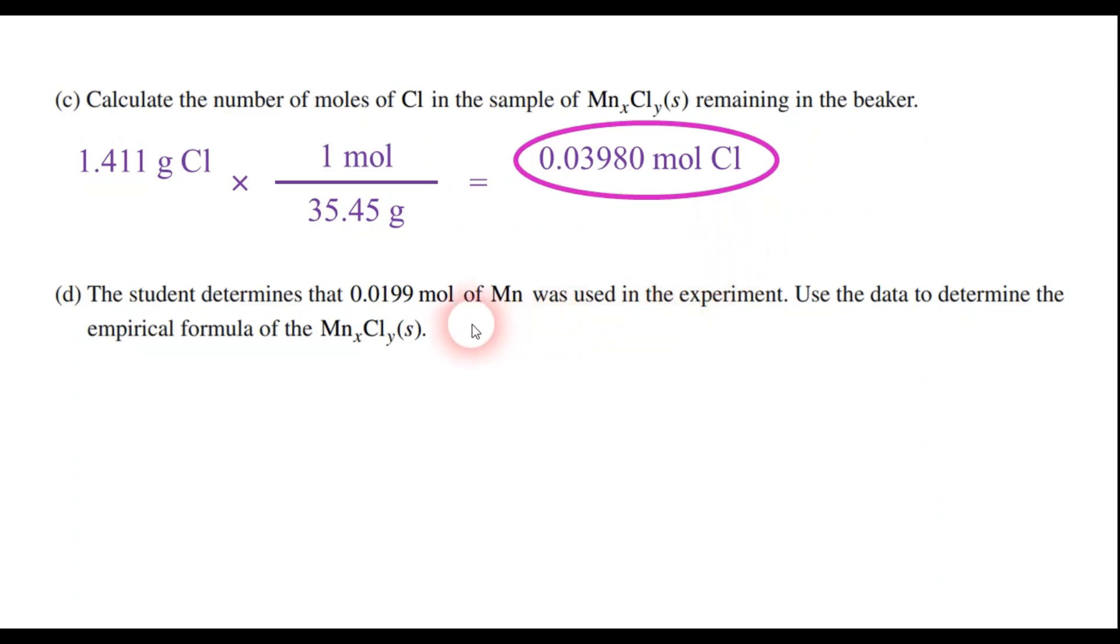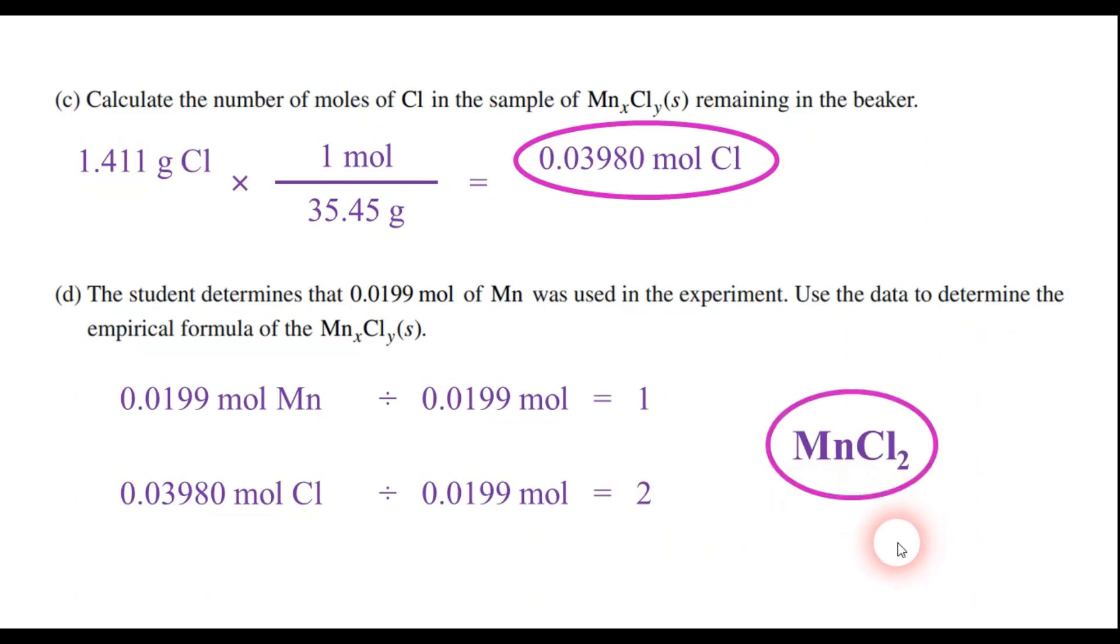Now, part D. It says that we're able to determine that 0.0199 moles of manganese was used in the experiment. Use the data to determine the empirical formula of this compound, the manganese chlorine compound. So we have to take the two mole values. The problem gives us this one. We just calculated the 0.0398 moles of chlorine. So if we know the mole values, we just have to divide by the smallest of those numbers, which is the 0.0199. So when you divide each of those numbers by the smallest, we get the ratios 1 and 2. And those values are essentially our subscripts for the empirical formula. So the answer is MnCl₂.